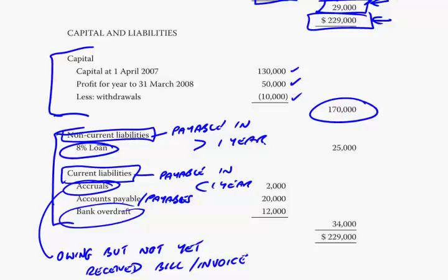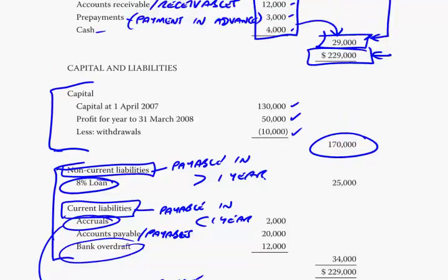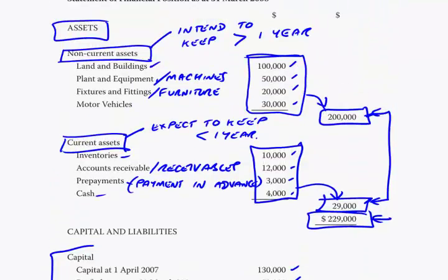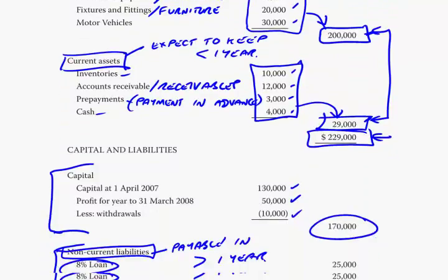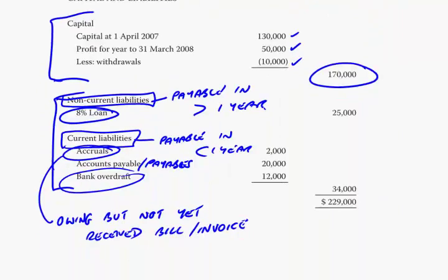There's the statement of financial position — it's very much the same as what we did earlier. Do remember those headings: assets split into non-current and current assets, and liabilities split into non-current and current.